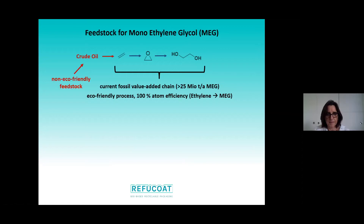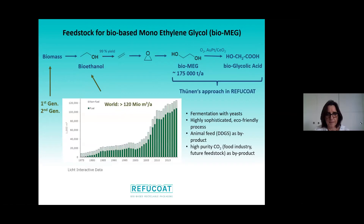However, the drawback is that crude oil is needed for the production of ethylene, which is of course a non-eco-friendly feedstock. However, we can take advantage of this established value-added chain by simply replacing crude oil and using bioethanol. Bioethanol can be converted in 99% yield to ethylene, and then we enter, in a drop-in way, the current value-added chain. Currently bioethanol is mainly produced from first-generation feedstocks, but research all over the world is ongoing to efficiently use second-generation feedstocks like lignocellulose.